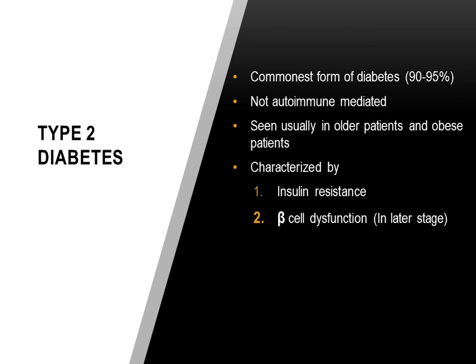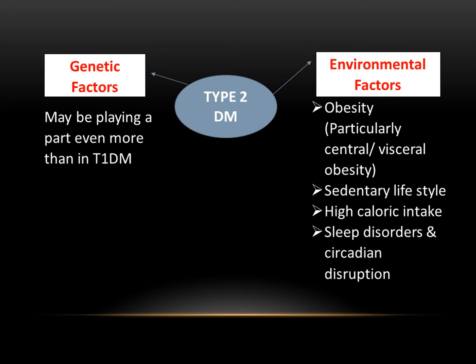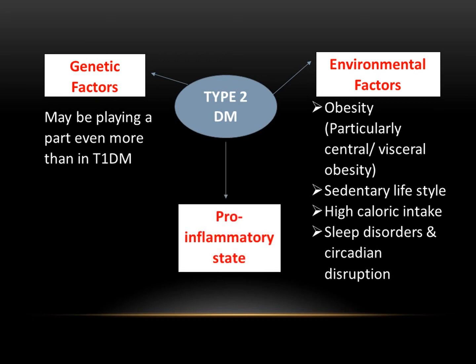Factors predisposing to Type 2 diabetes mellitus include genetic factors and environmental factors such as central or visceral obesity, sedentary lifestyle, physical inactivity, high calorie intake, high energy expenditure imbalance, sleep disorders, circadian disruption, and a pro-inflammatory state.